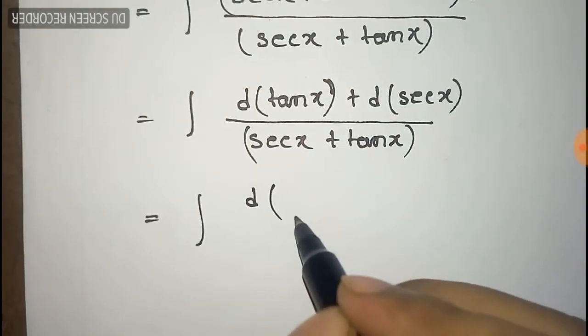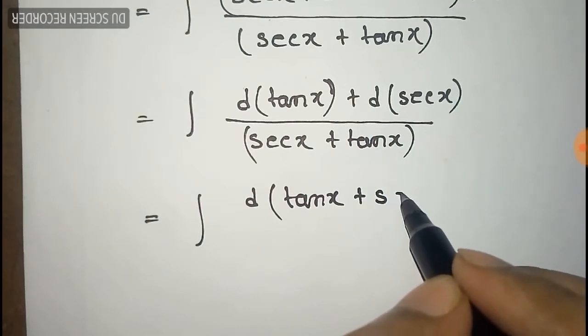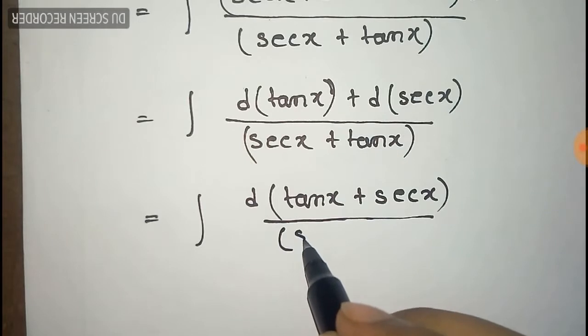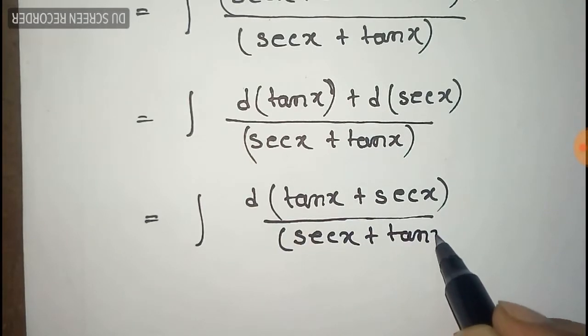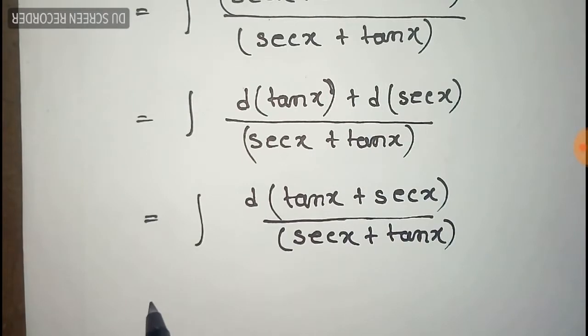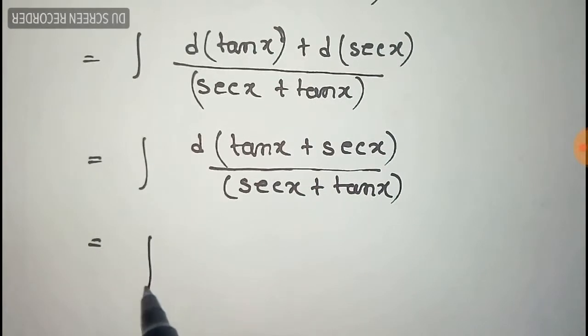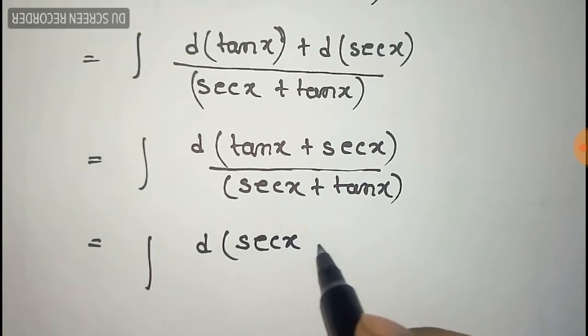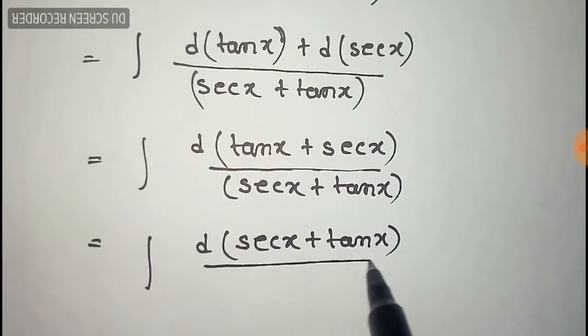Now taking the d part common, we write it like d of (tan x plus sec x). And rearranging it, taking sec x first, you can write it like this.